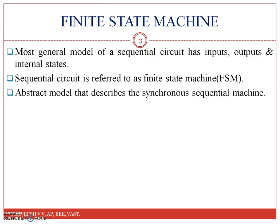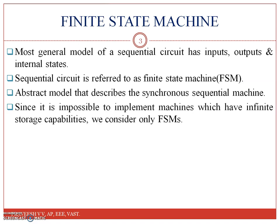In a circuit, the output depends on the present input as well as the past inputs or outputs, that is on the past histories. Since a machine might have an infinite variety of possible past histories, it would need an infinite capacity for storing them. But it is impossible to implement machines which have infinite storage capabilities, so we will be considering only finite state machines.